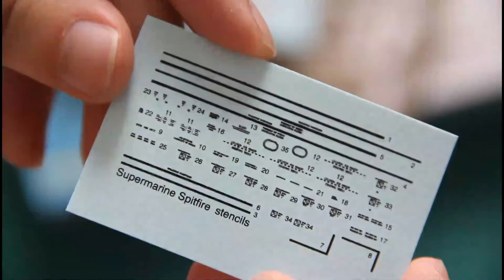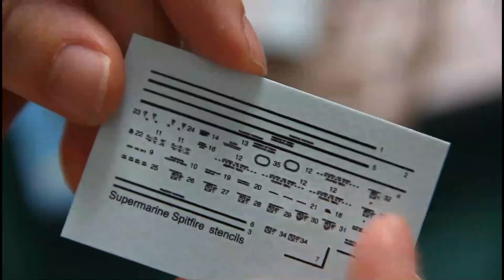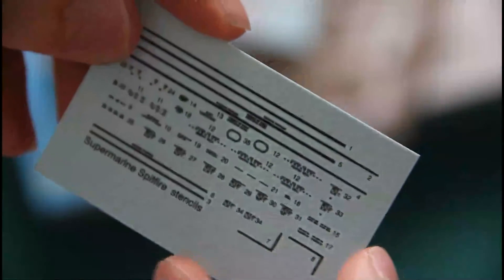Which is dedicated to stencils only. Even the tiniest writings can be easily read. And stencils are quite nice to have in 72nd scale. You don't usually see them in such small scale.